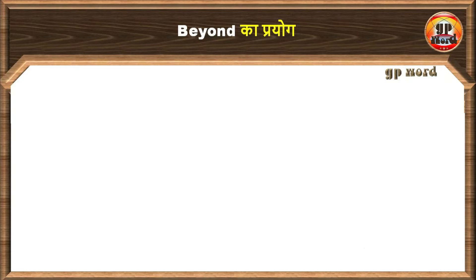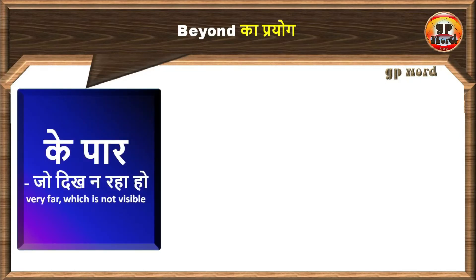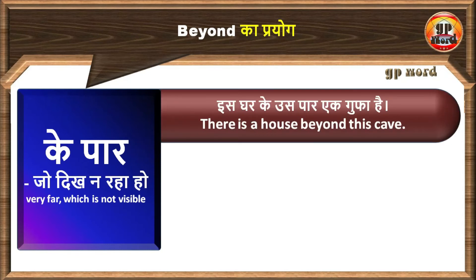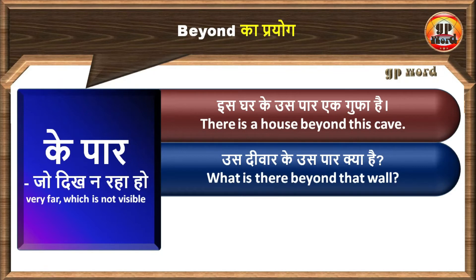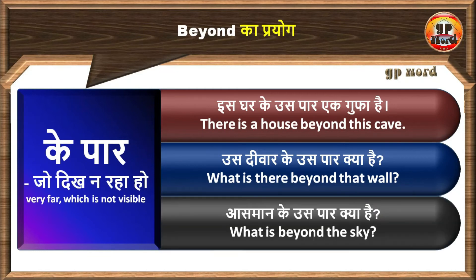Let's know with sentence examples. इस घर के उस पार एक गुफा है। There is a house beyond this cave. उस दीवार के उस पार क्या है? What is there beyond that wall? आसमान के उस पार क्या है? What is beyond the sky?